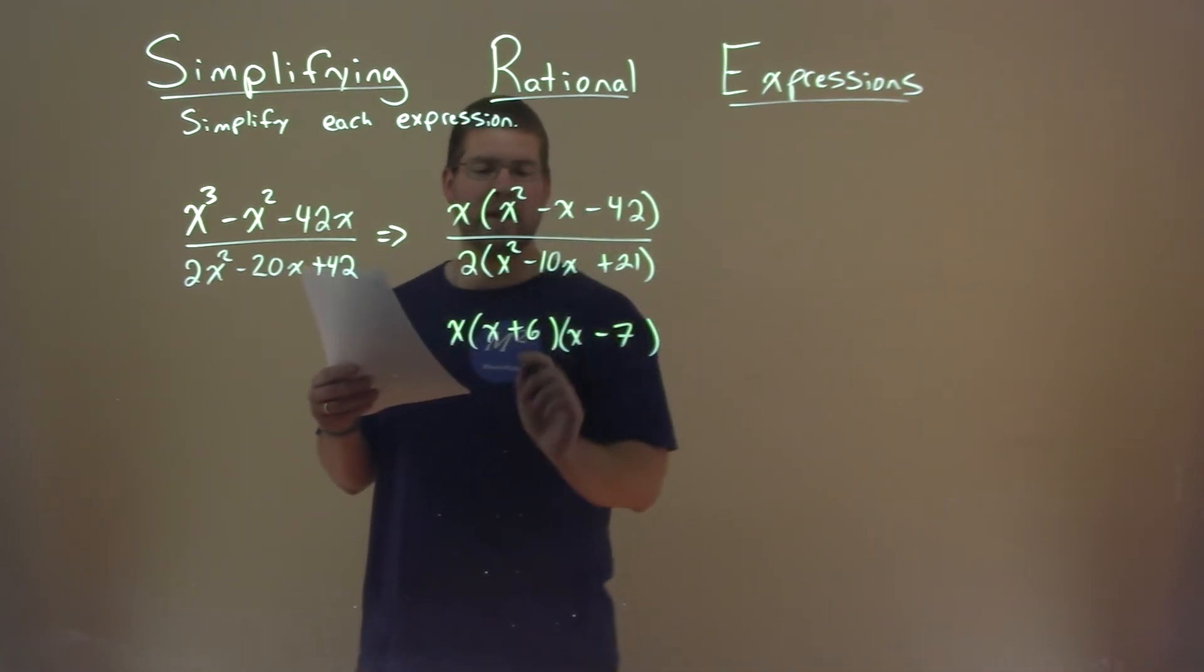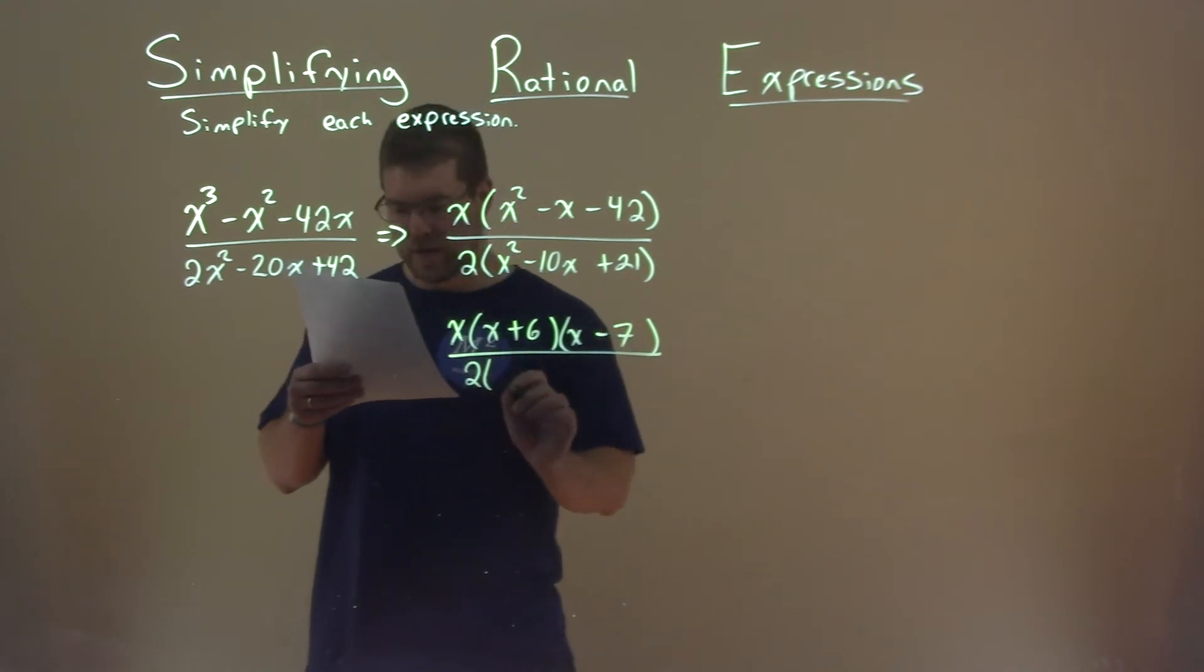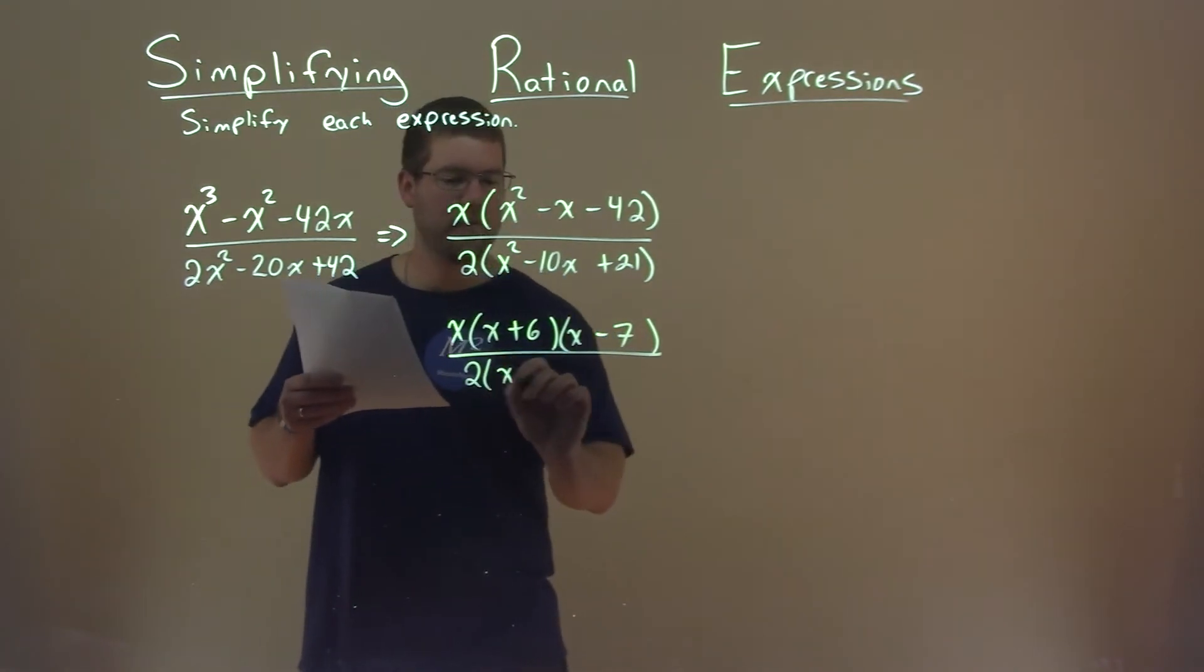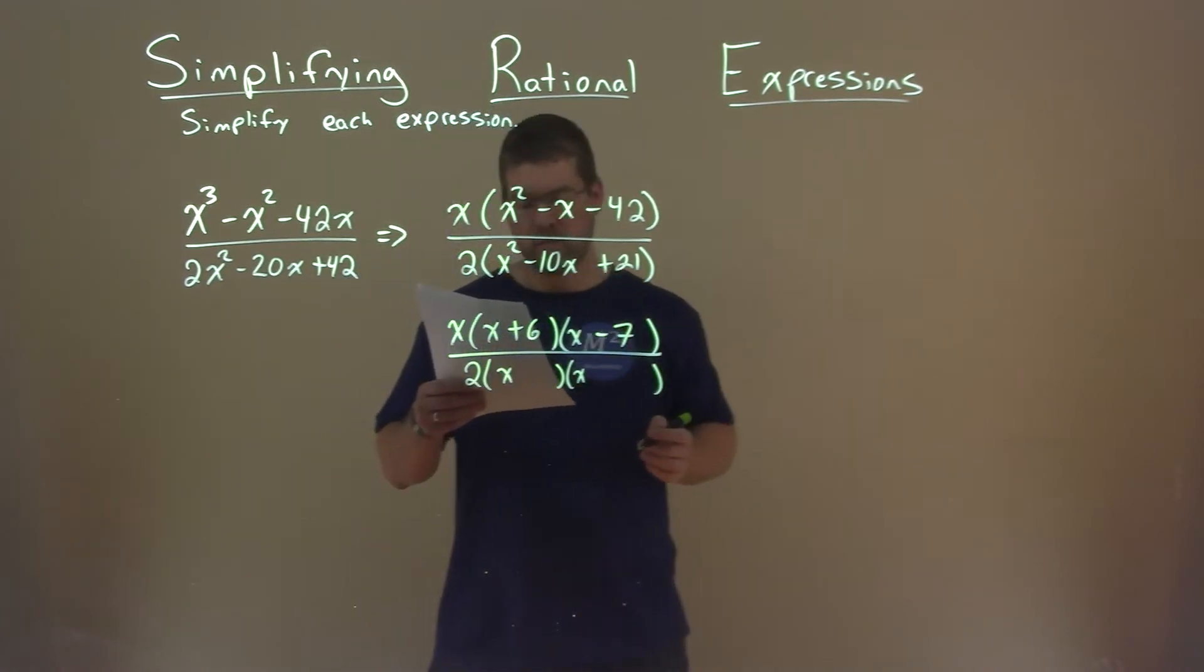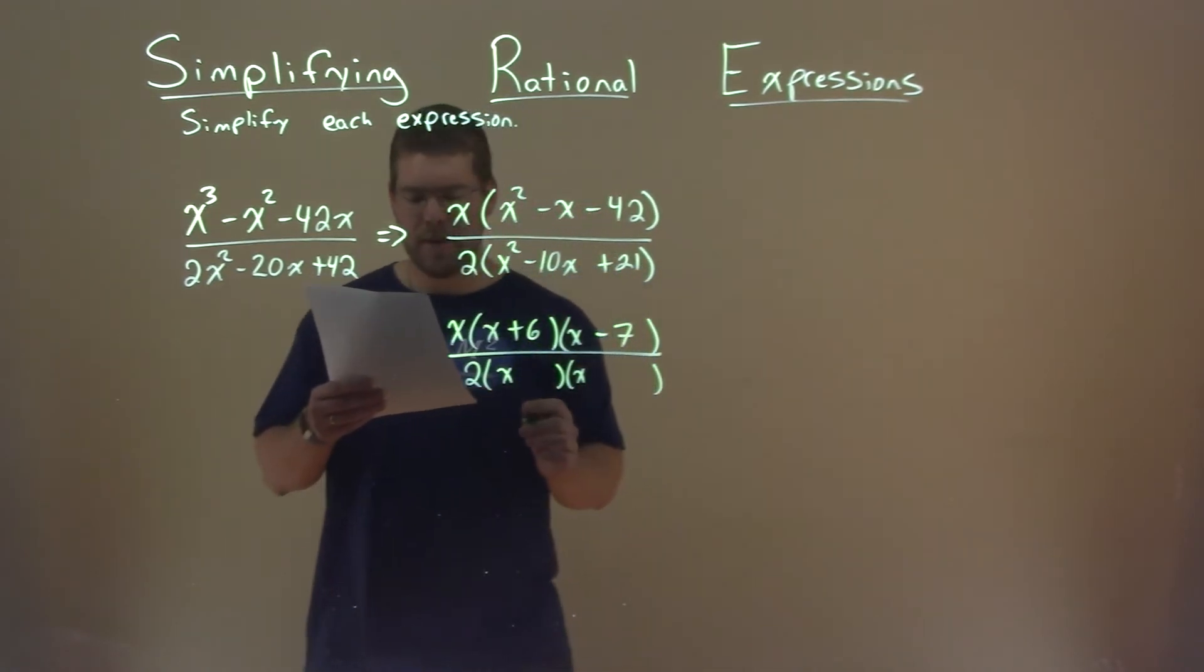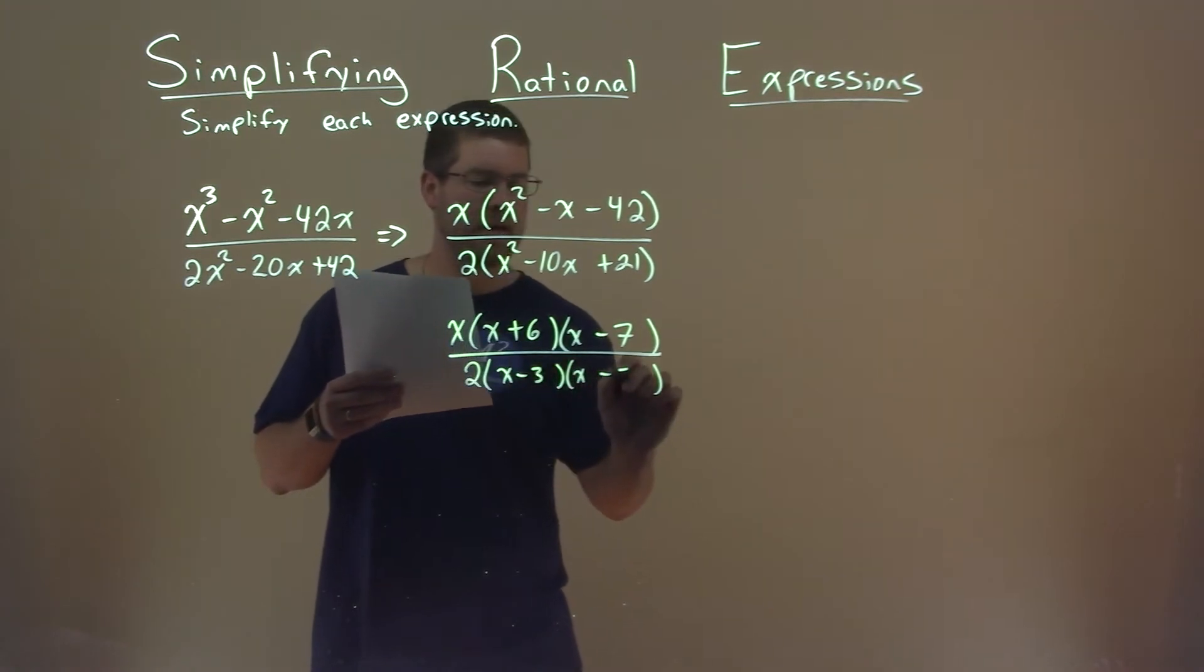And when we add them, we get a negative 1. So now let's factor the denominator. We have our form set up. What two numbers multiply to be a positive 21 but add to be a negative 10? That's a minus 3 and a minus 7.